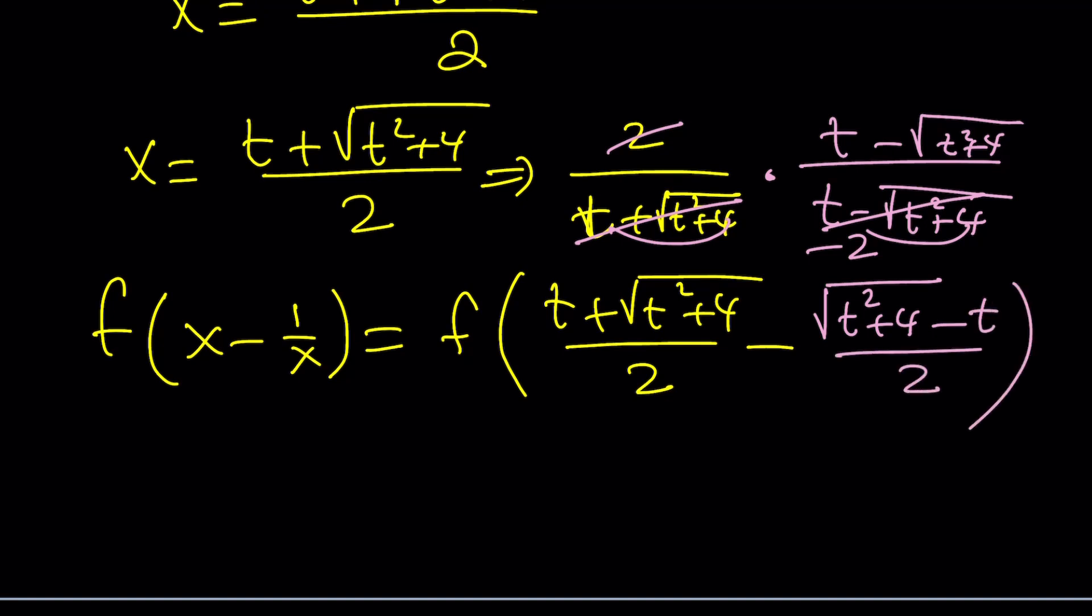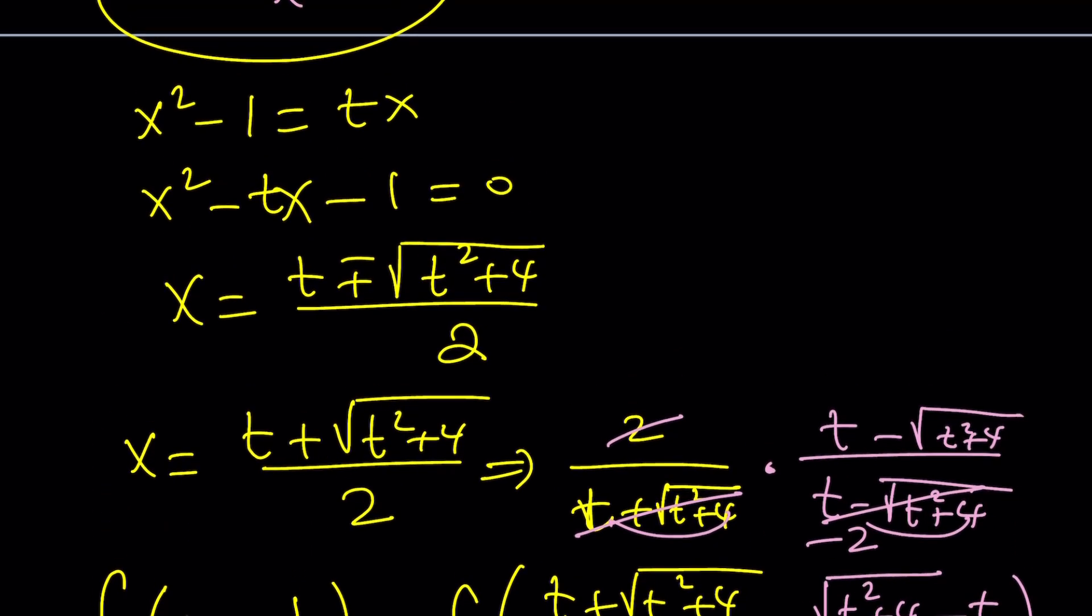And of course, when you subtract them, the radicals are going to cancel out. And t minus negative t is going to be 2t, or not 2t, right? And we're going to get f of t from here. So, that makes sense, obviously. We didn't have to check this, but it's good to see that it's working.